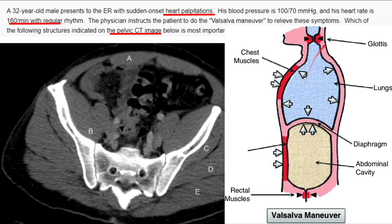In the Valsalva maneuver, you increase intrathoracic and intra-abdominal pressure by closing the glottis — you inhale but hold your breath and strain, just like taking a bowel movement. To do this you need to contract muscles. The most important muscle here, which pushes inside the abdomen and increases intra-abdominal pressure, is the rectus abdominis on the anterior abdominal wall.